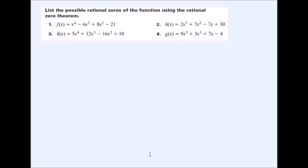Up until this video we've learned how to factor polynomials, or for quadratic equations we've used the quadratic formula or other methods. But sometimes you have to find the zeros or x-intercepts for a longer polynomial when you can't factor, and you have to follow a much lengthier process. This question says: list the possible rational zeros of the function — that is, list the possible x-intercepts using the rational zero theorem.